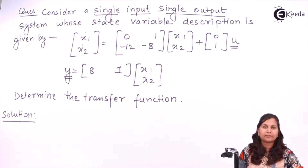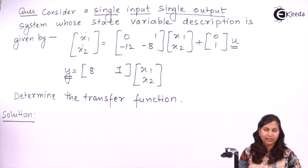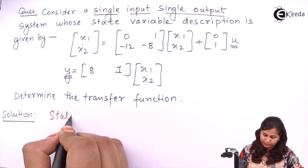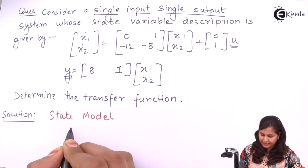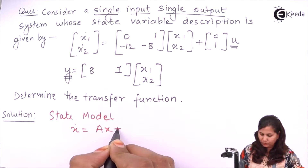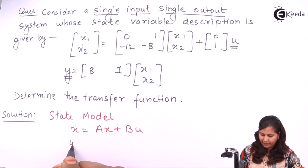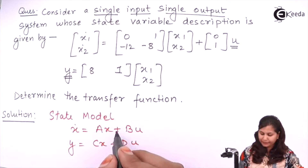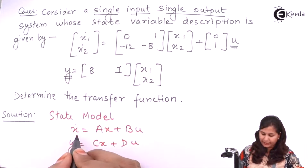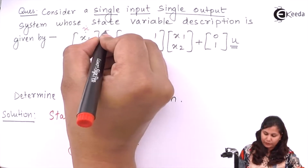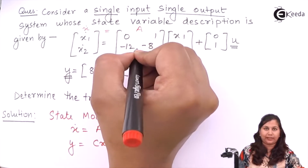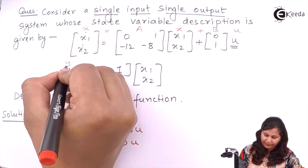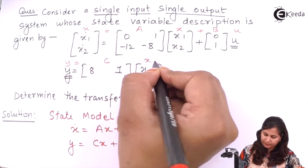As we know, the state model in a generalized way is represented as: x-dot equals Ax plus Bu, and y equals Cx plus Du.